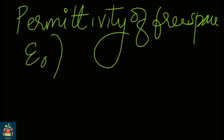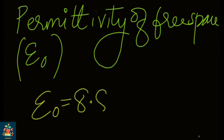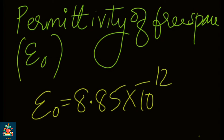If we look at free space, this is the space where it is unoccupied by any matter or any field — that space is free space. The value of epsilon zero is equal to 8.85 into 10 raise to minus 12. Epsilon is the symbol for permittivity, and epsilon zero denotes the permittivity of free space, which is equal to 8.85 into 10 raise to minus 12.